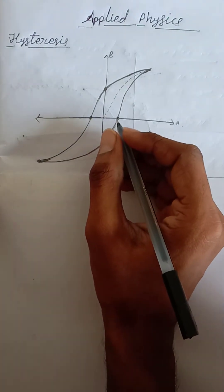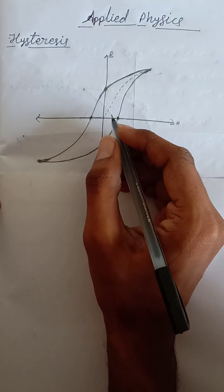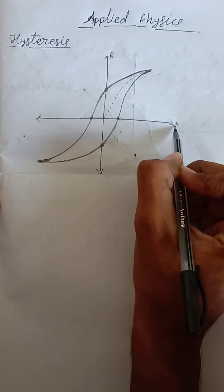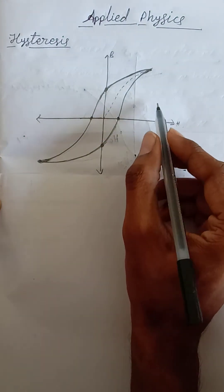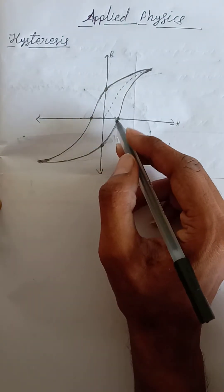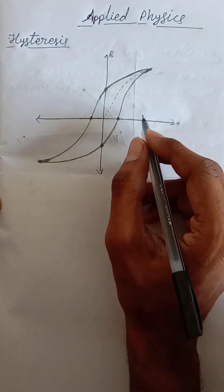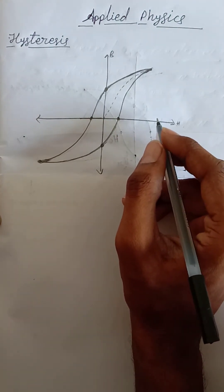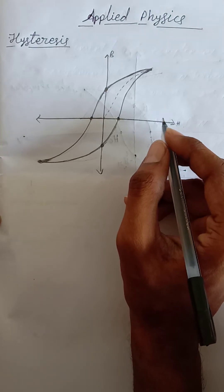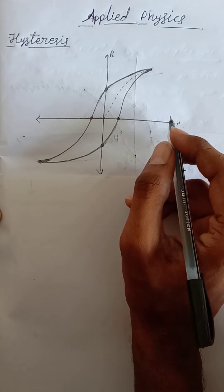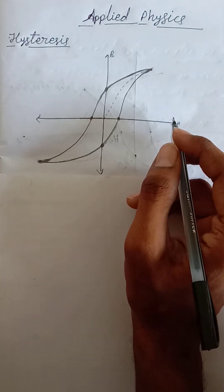Let's see what is hysteresis. Hysteresis is defined as the loop or curve plotted on BH coordinates which shows how the magnetization of the ferromagnetic material varies when the material is subjected to periodical reversal of magnetization — that means when we are increasing and decreasing the positive and negative magnetic field on the material. Let's see that process step by step.